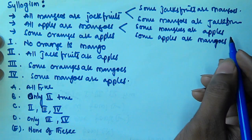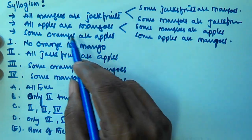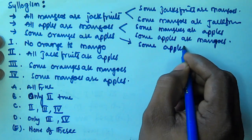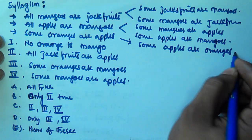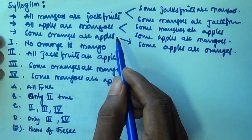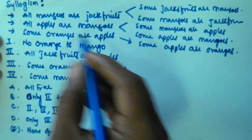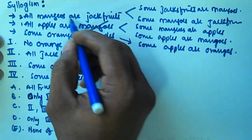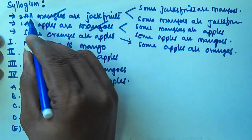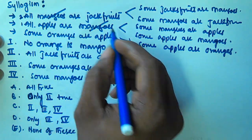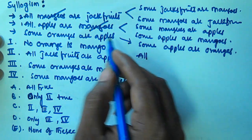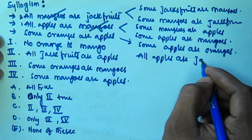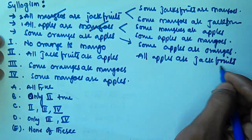If all apples are mangoes, then some apples are also mangoes. From 'some oranges are apples' we can interchange to get some apples are oranges. Now combining the first two original statements — the predicate of the first (mangoes) matches the subject of the second. Both are 'all', so we derive: all apples are jackfruits.